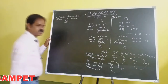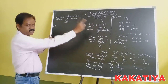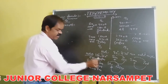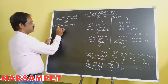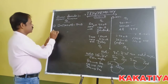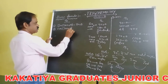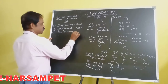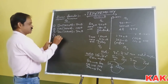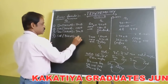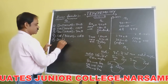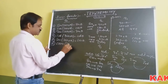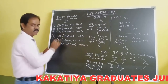Next, consider 360 + θ. Since 360 is an even angle, the ratio will not be changed. So sin(360 + θ) = sin θ, cos(360 + θ) = cos θ, tan(360 + θ) = tan θ, cot(360 + θ) = cot θ, sec(360 + θ) = sec θ, and cosec(360 + θ) = cosec θ.